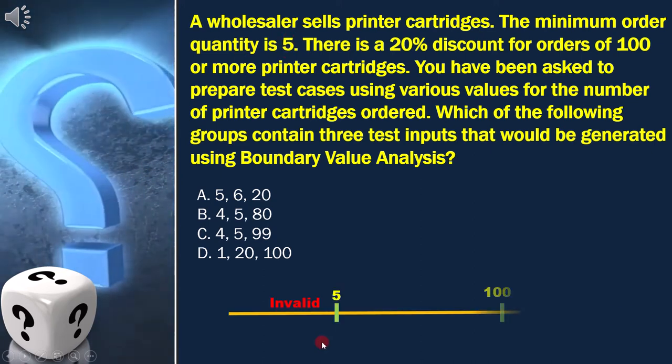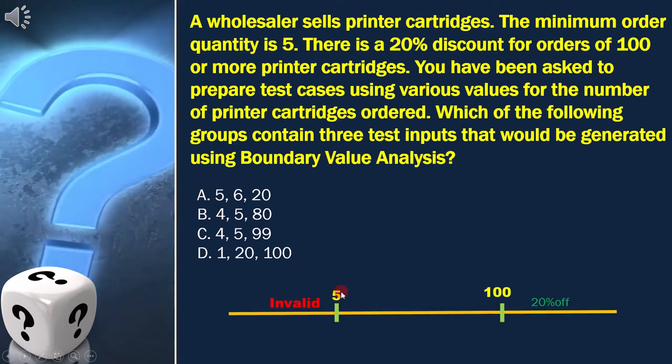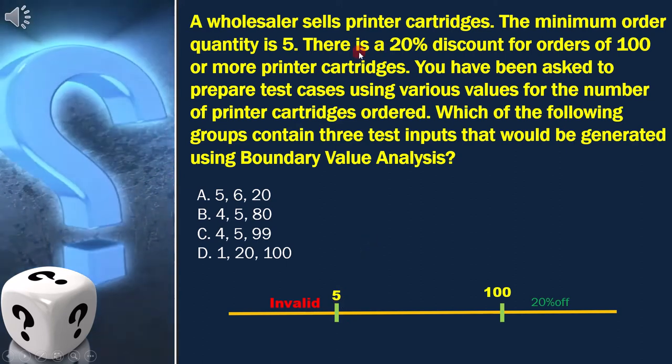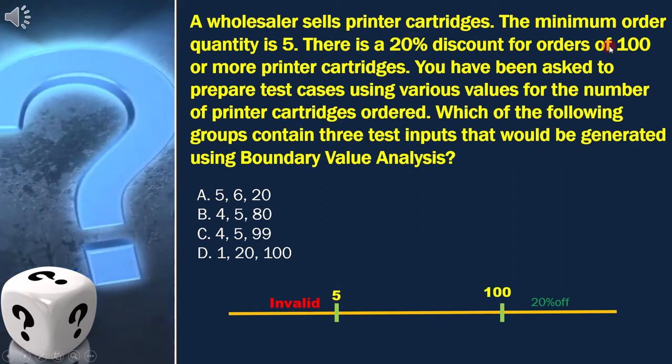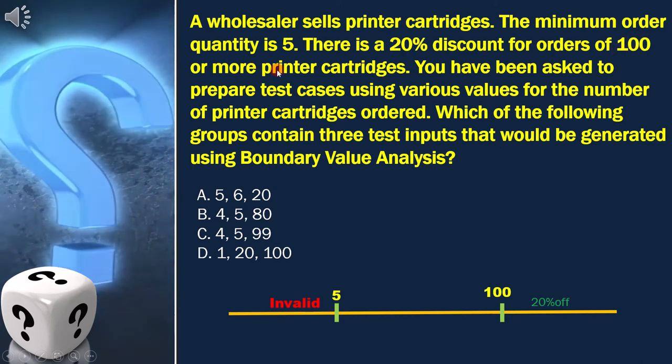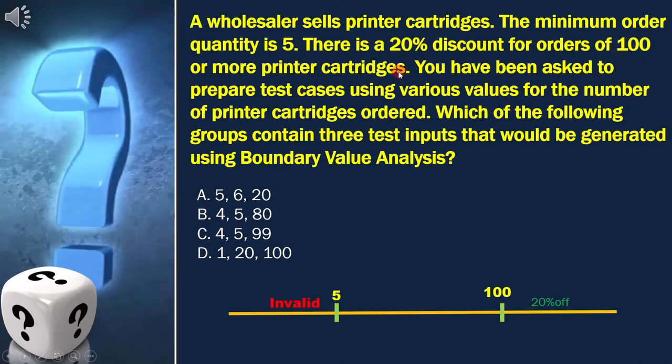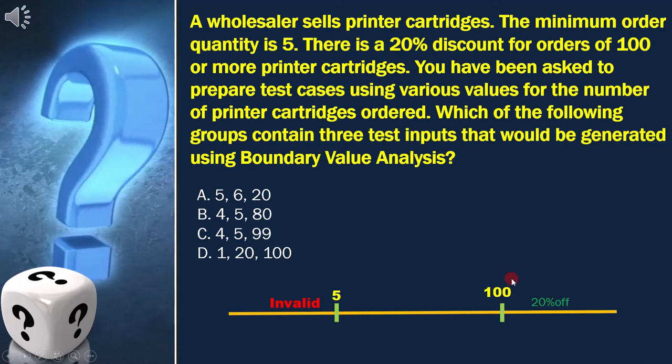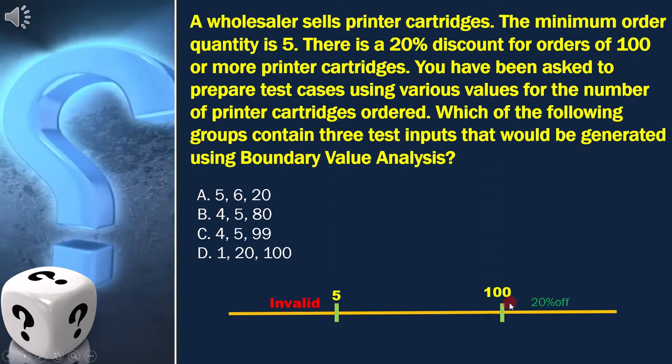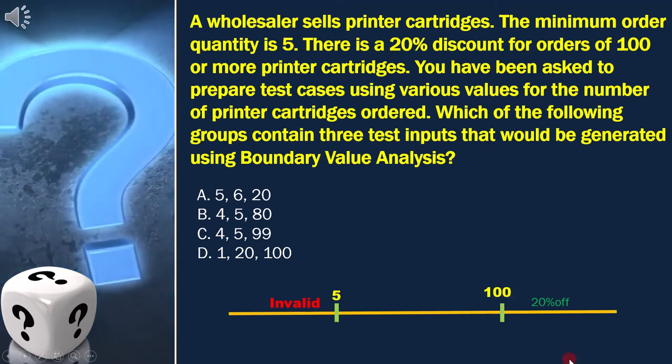That is why 5 is the lower boundary. And as per the question, we have to give 20% discount for orders of 100 or more printer cartridges. That is why 100 is the upper boundary. With this, the boundary value diagram is ready.